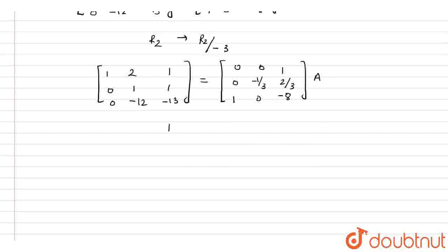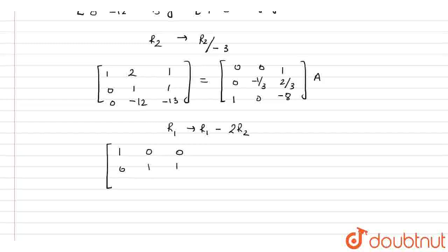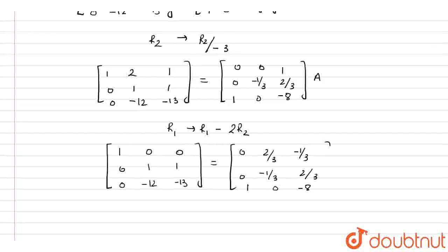The next operation is R1 = R1 − 2R2. After applying this operation, we get [1, 0, 0; 0, 1, 1; 0, −12, −13], equal to [0, 2/3, −1/3; 0, −1/3, 2/3; 1, 0, −8] multiplied by A.